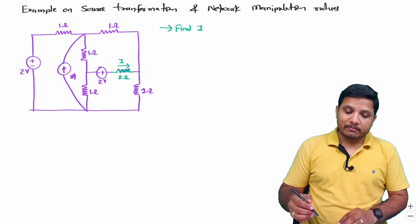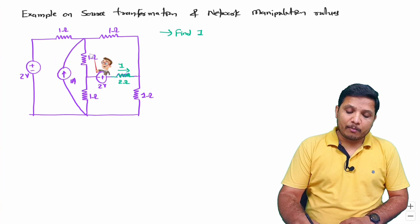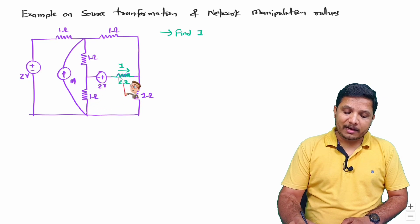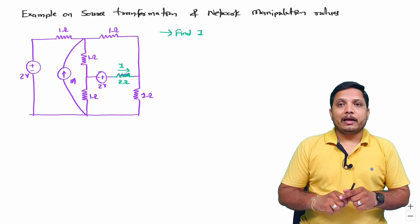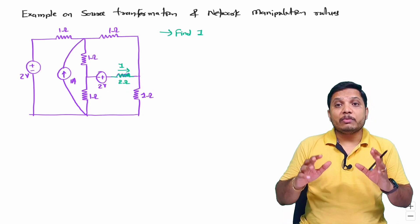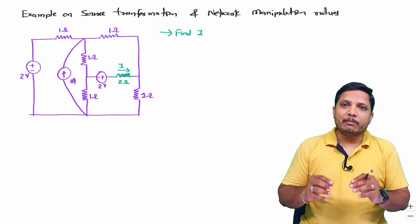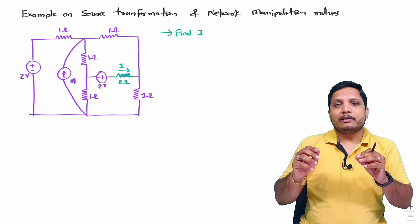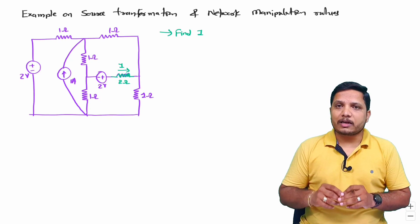Here we have been given a complex circuit, and we are required to find current I passing through the 2-ohm resistor. Our agenda is to minimize the circuit using network manipulation rules and source transformation.